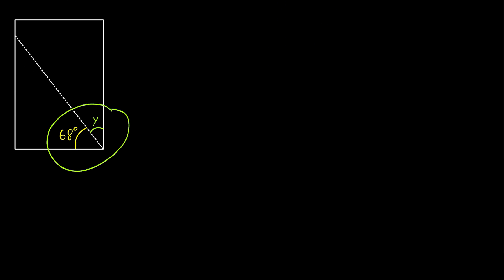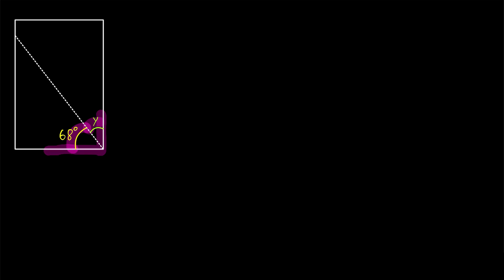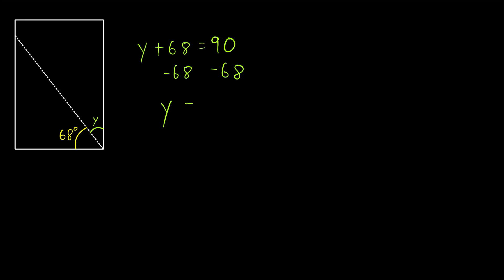On to problem number two. This is exactly the same type of problem, so give it a try yourself before watching the solution. Again, this whole angle is an angle of a rectangle, so it has a measure of 90 degrees. It's cut into two smaller angles. Notice this time it's not being cut by a diagonal, but that doesn't change the situation. Complementary angles add to 90 degrees, so we have that y plus 68 is equal to 90. Subtracting 68 from both sides, y is equal to 90 minus 68, which is 22 degrees.